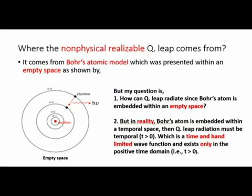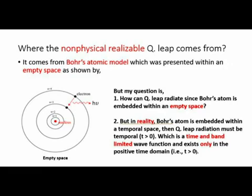This slide shows where the non-physically realizable quantum leap comes from. It comes from Bohr's atomic model, which was presented within an empty space, as shown by the figure on the left-hand side. My question is: one, how can quantum leap radiate since Bohr's atom is embedded within an empty space? Two, yet in reality Bohr's atom is embedded within a temporal space, then quantum leap radiation has to be temporal — t > 0 — which must be a time and band limited wave function that exists only in the positive time domain.